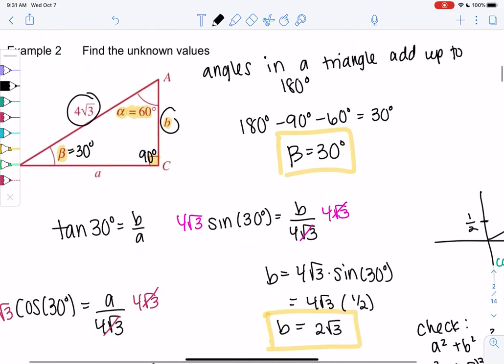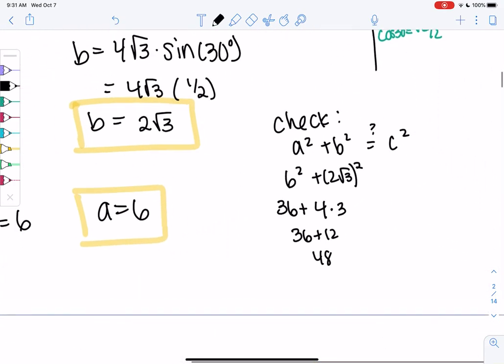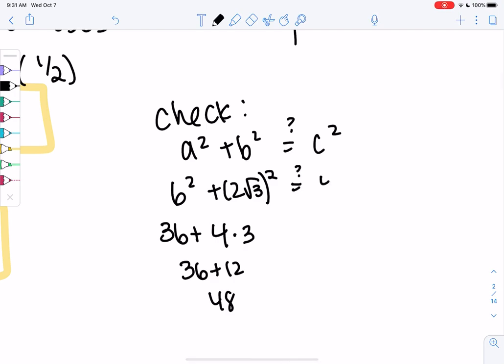And then my C would be 4 root 3. So when we square that, 4 squared is 16. Root 3 squared is just 3. And we get 48.